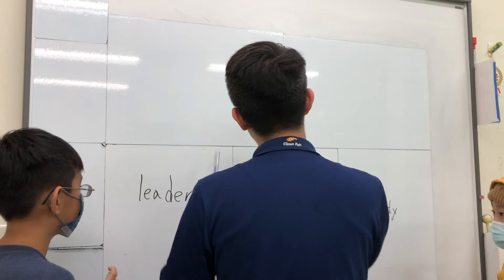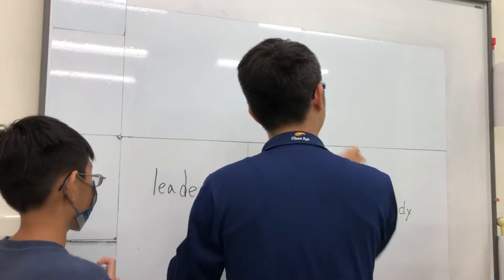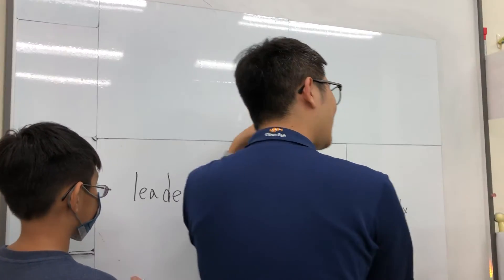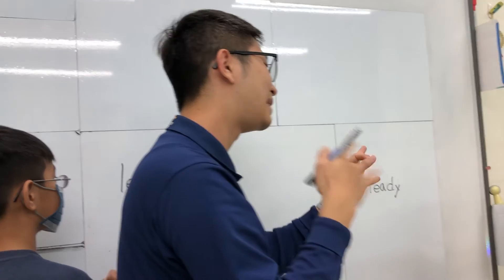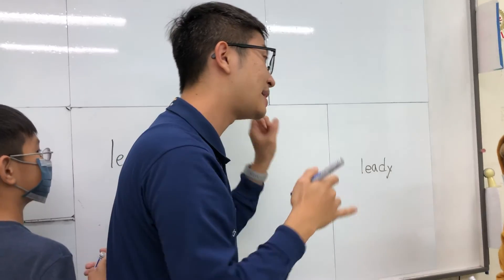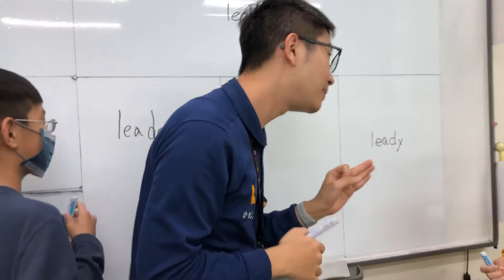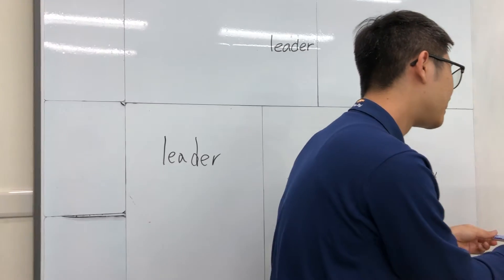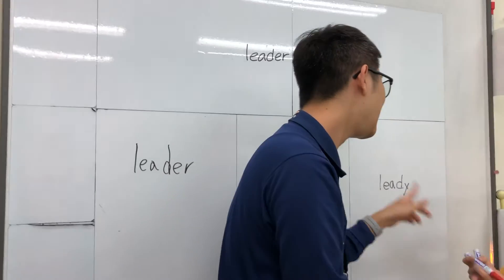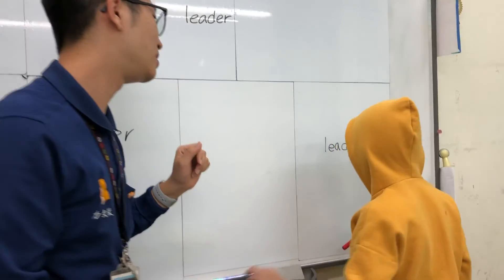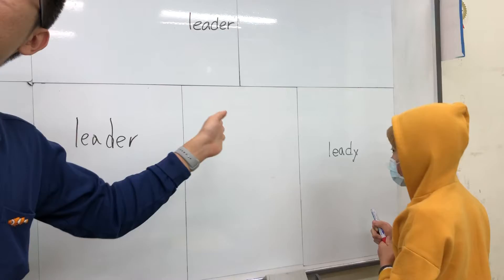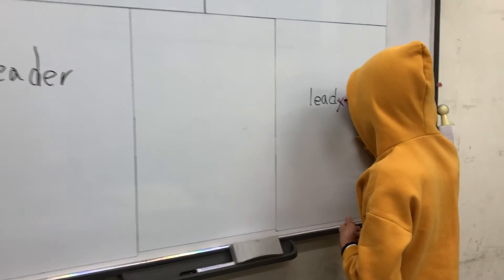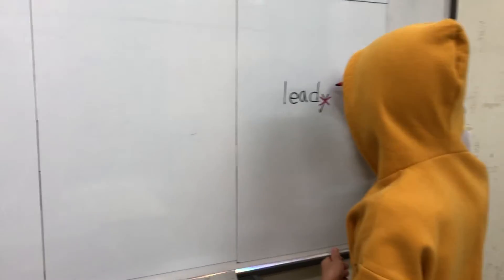第二個步驟是，你要在你寫字的過程當中跟我去做比對。哪一些東西要刪除，哪一些東西是要增加進去的？Take a look. 這個地方很重要，你可以進去拍。Correct.